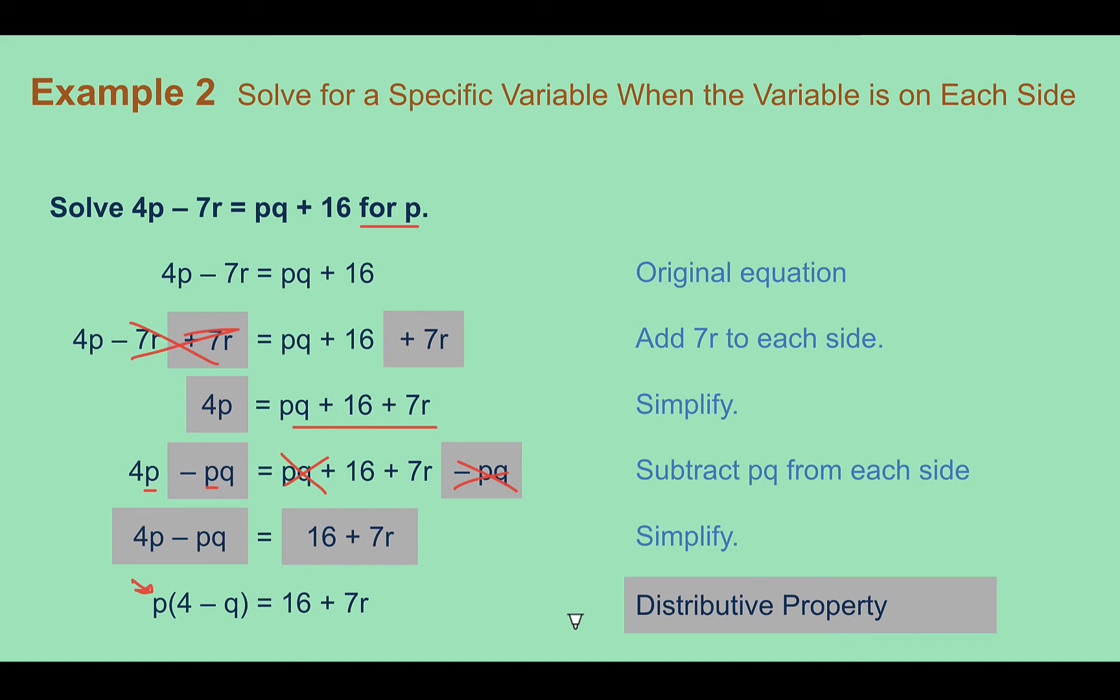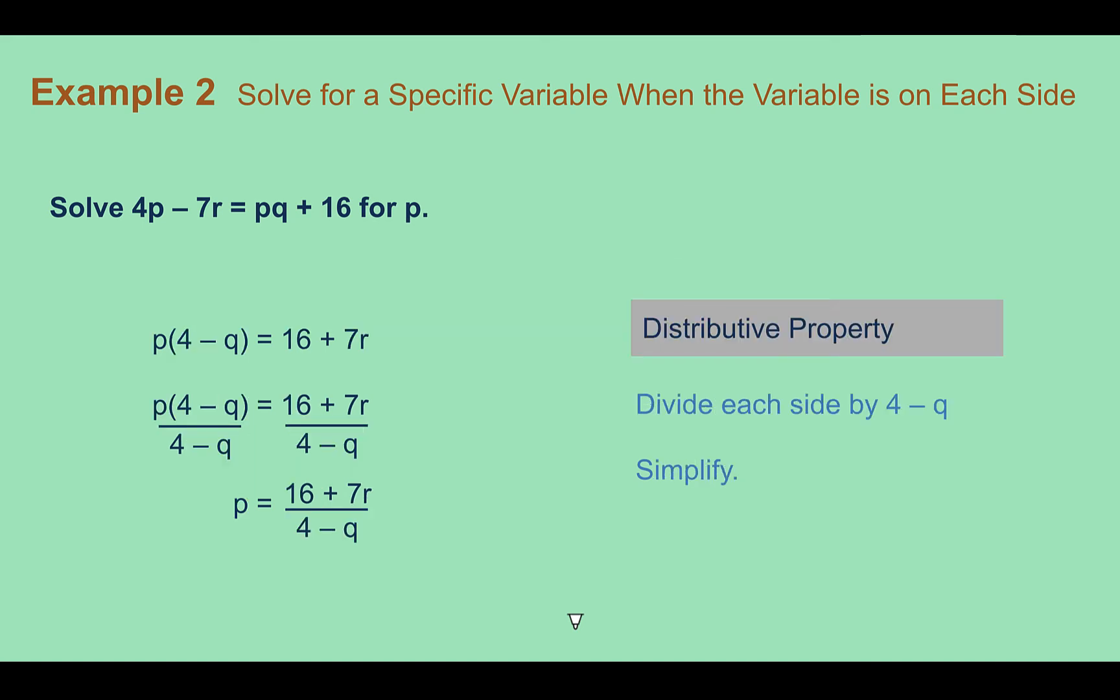Then I can divide both sides by that whole parentheses thing here. So notice what's on my denominator now is what was in parentheses. Doing that, anything divided by itself is 1, so I'm just left with 1p or p. And then here I have 16 plus 7r divided by that quantity 4 minus q. I can't simplify this out anymore in this instance. I don't want to split it up since I have more than one term in the denominator, so I'm going to leave this as my final answer.